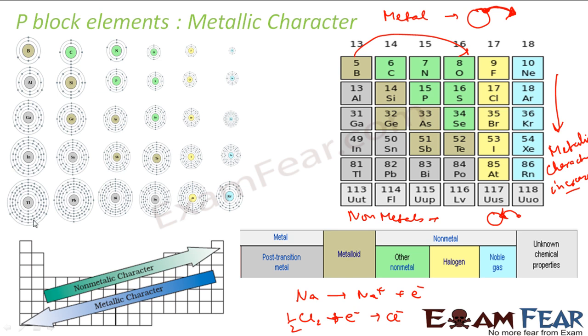So if you go down the group, what happens is the size increases, the effective nuclear charge decreases. So they have more tendency to give electrons. So the metallic character increases. But if you see here, the top few elements, the size is less. For example, if you compare, let us suppose, carbon and germanium, the carbon size is less, germanium size is more. So germanium has more tendency to give electrons. Now these electrons are not held tightly with the nucleus. So it is little metallic in character. But carbon, they have less tendency to give electrons. In fact, they want to get electrons. So they are non-metals.